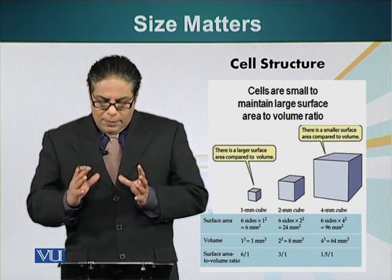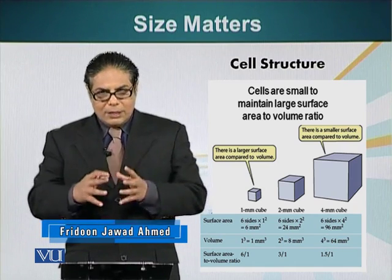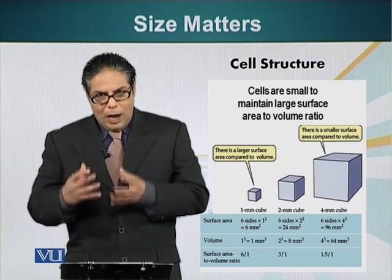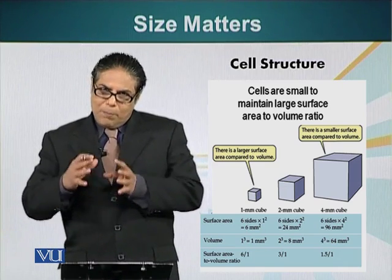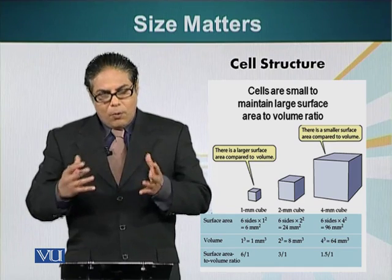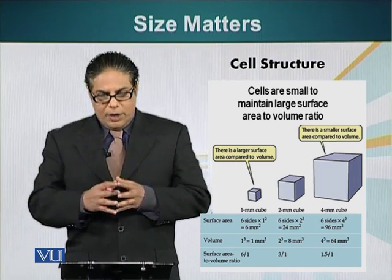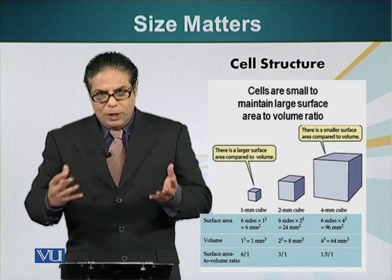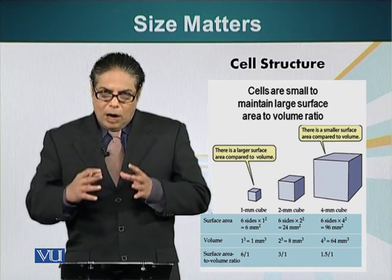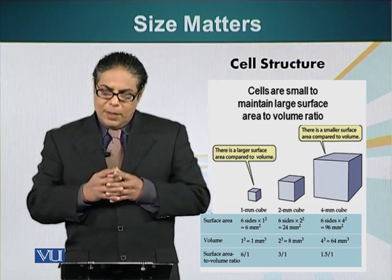Cells are small because they have to maintain a specific surface area to volume ratio. As the volume increases, so does the demand for raw materials, and also the requirement that the waste products produced by the cell during metabolism have to be released outside the cell. For example, cells need glucose as a source of energy. They burn glucose in an oxidation reaction, just like our fuel burns in our houses or in our cars — it produces carbon dioxide. Carbon dioxide has to be exported out, whereas glucose and oxygen have to be brought in.